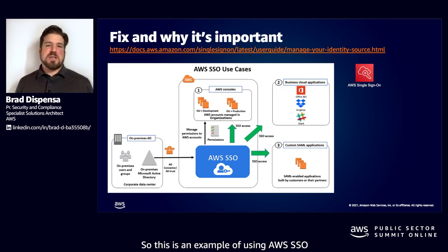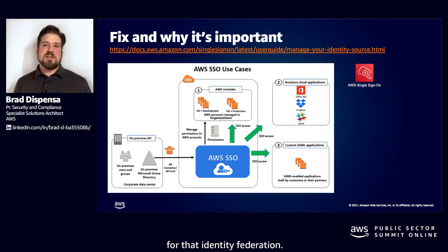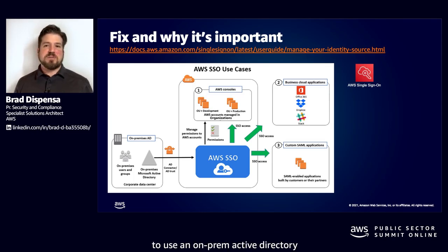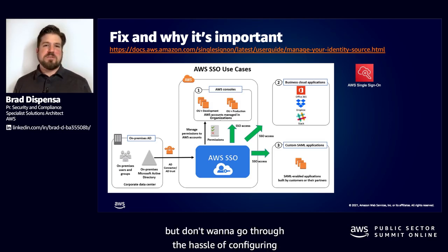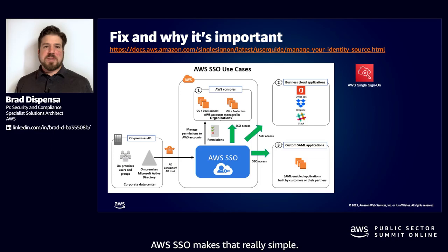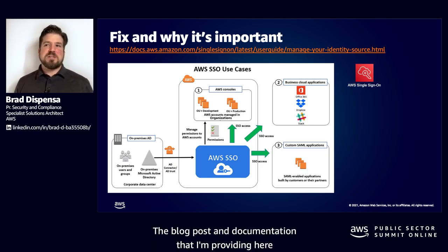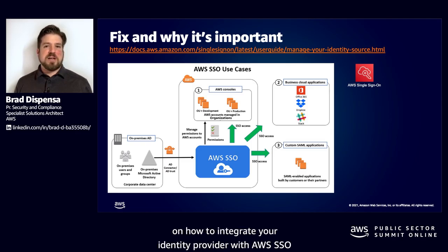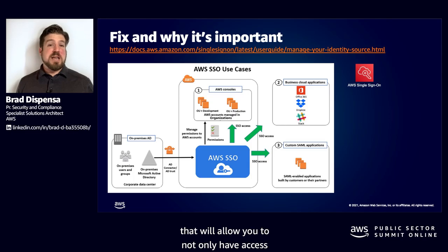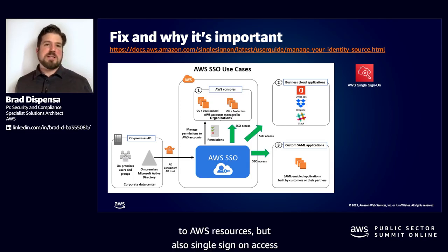This is an example using AWS SSO for identity federation. If you're in a situation where you need to use an on-premises Active Directory and want single sign-on but don't want to go through the hassle of configuring the SAML environment inside of AWS, AWS SSO makes that really simple. The blog post and documentation provided give a walkthrough on how to integrate your identity provider with AWS SSO, allowing access not only to AWS resources but also single sign-on to other resources like Office 365, Dropbox, or even Slack.